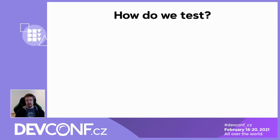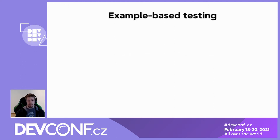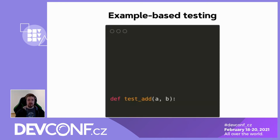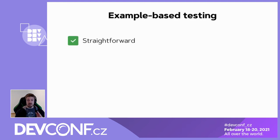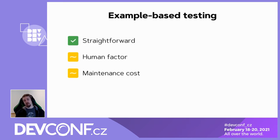So now let's take a look at how we test things. For example, we can check that the commutative property of addition works. With the example-based approach, we can write something like this in Python — a function that accepts two arguments and verifies the property, and we have our test cases with PyTest. So we write them manually. Of course it's super straightforward, but we can test only for things that we can think of. Often many edge cases are missed. In the end, we need to maintain all these manually written test cases, which also adds some maintenance costs.